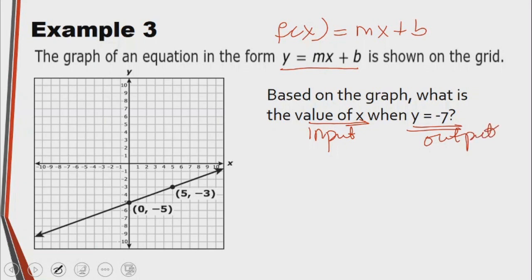In this case, even though we are not given the function per se, we are given the graph of the function, and that's all that matters. We are told to find the value of x when y equals negative 7. We come to y. This is the y axis.